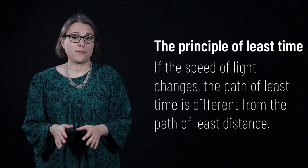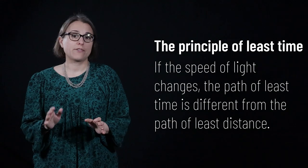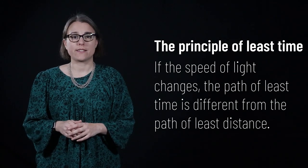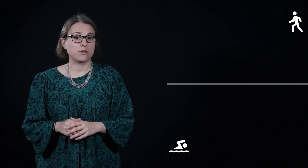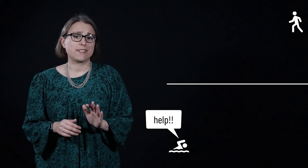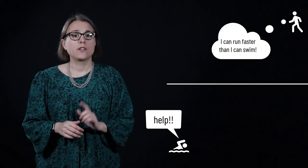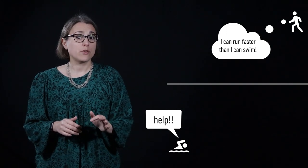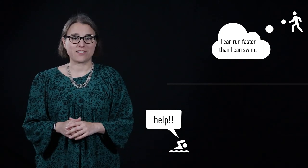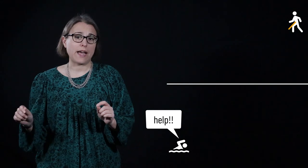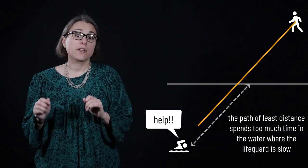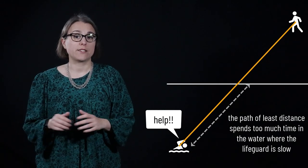When light travels through different media, the path of least distance and the path of least time are no longer the same. Consider the lifeguard problem as an analogy. A lifeguard on the beach sees a swimmer in the water who may be drowning. She can run on the beach faster than she can swim, so she wants to optimize her route. If she takes a straight line path — the path of least distance — she will spend too much time in the water, which will not be the fastest route.